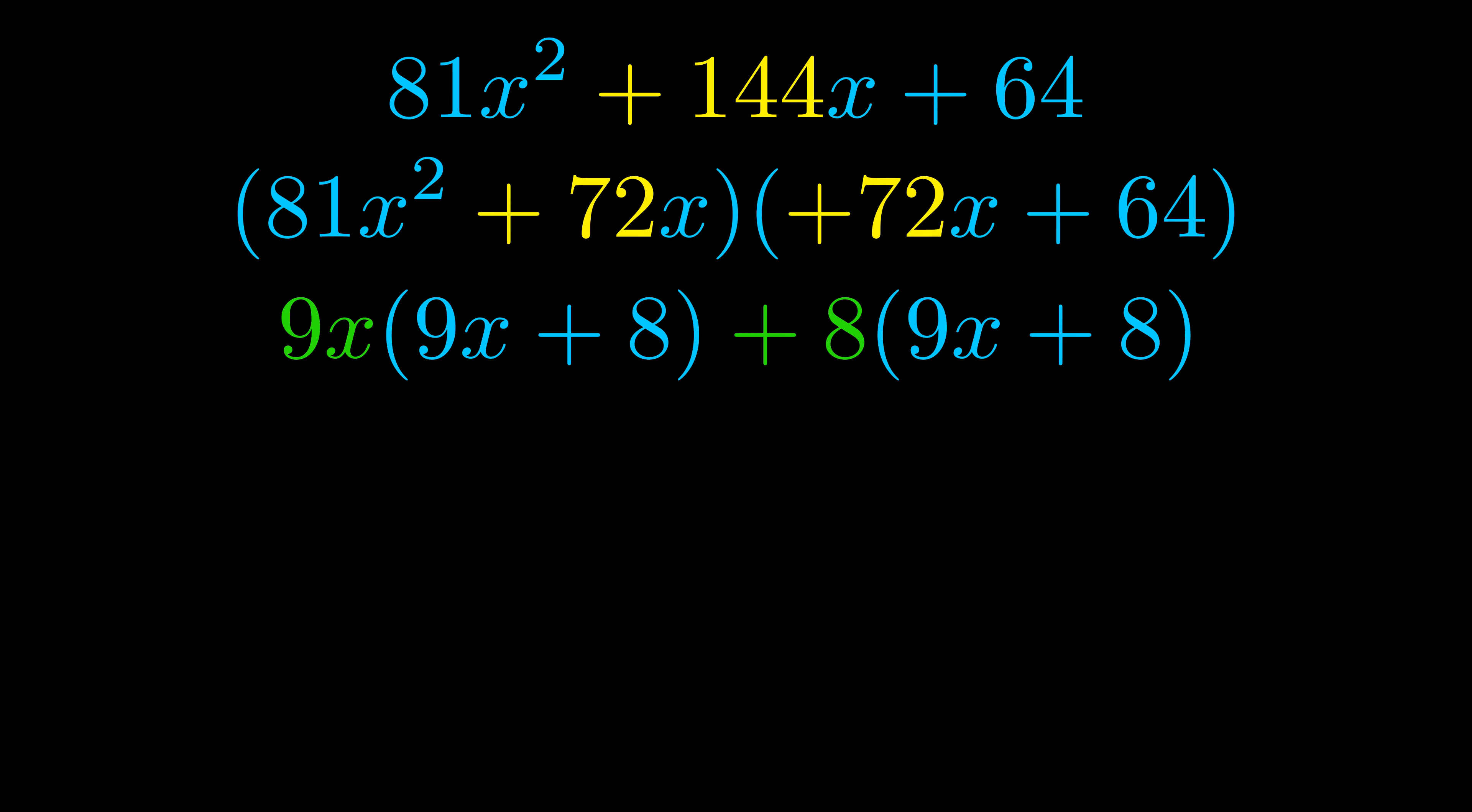Notice also how what remains inside of the parentheses is the same in both cases. The blue values are the same. Those blue values will become one of our factors, and we will combine the two green values, the GCFs that we pulled out, to get the other one. And that is our fully factored equation.